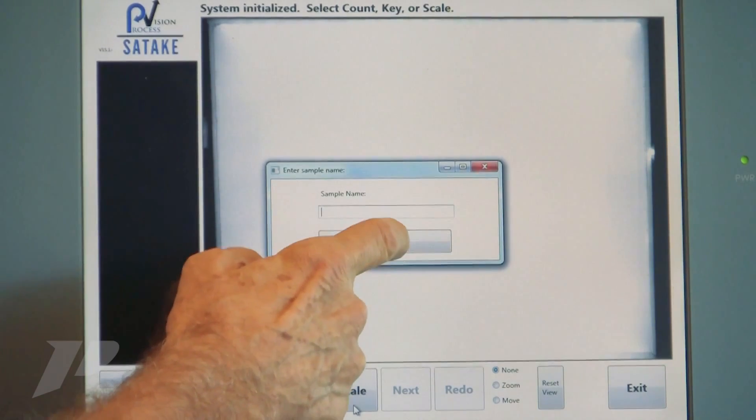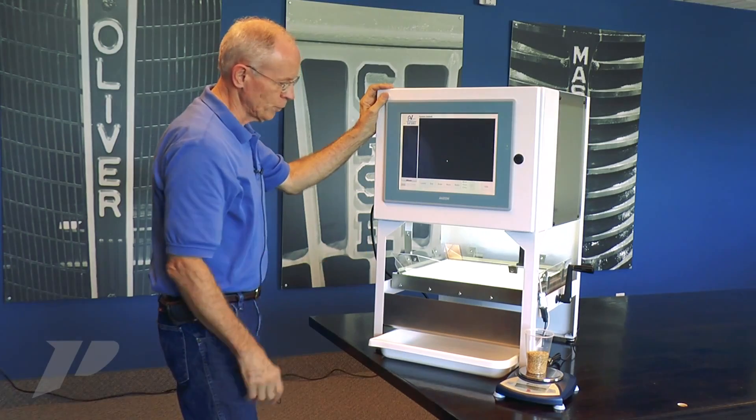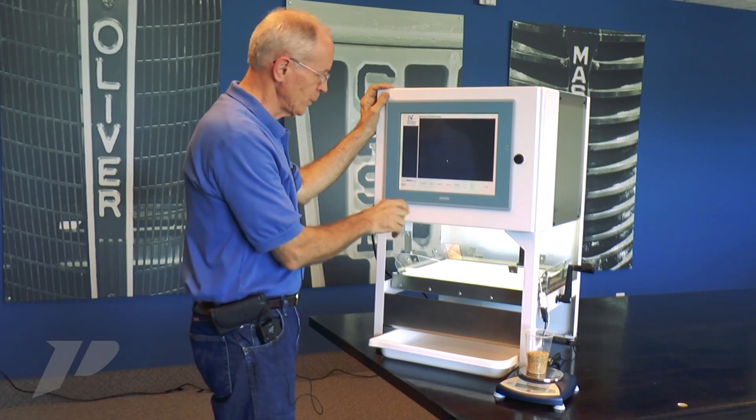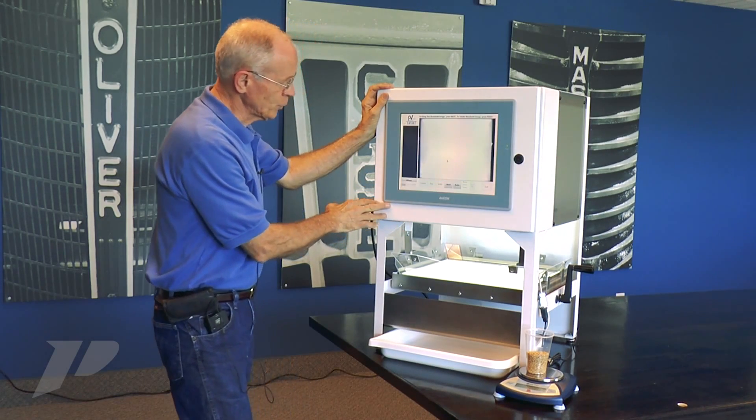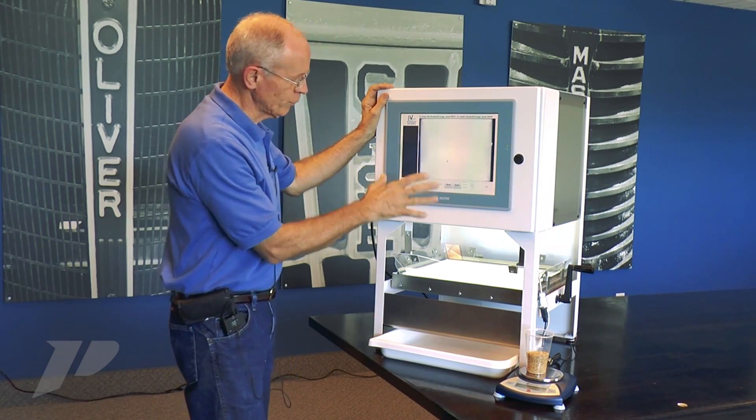It's asking for a sample name. I'm going to click through that, but if you have a barcode reader, you could barcode a sample name in or you could type it in from a keyboard. We're getting a threshold image. We have a good clean threshold image.